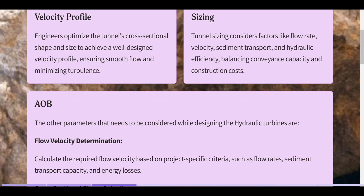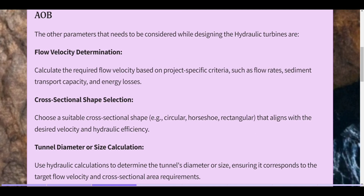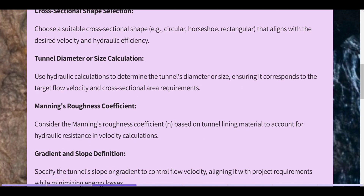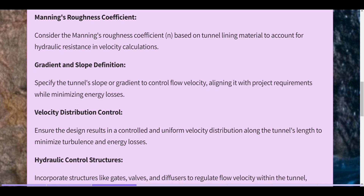Other parameters to consider in hydraulic tunnel design include: flow velocity determination — calculating required flow velocity based on flow rates, sediment transport capacity, and energy losses; cross-sectional shape selection aligned with desired velocity and hydraulic efficiency; tunnel diameter or size calculation using hydraulic formulas; Manning's Roughness Coefficient based on lining material; and gradient and slope definition to control flow velocity while minimizing energy losses.